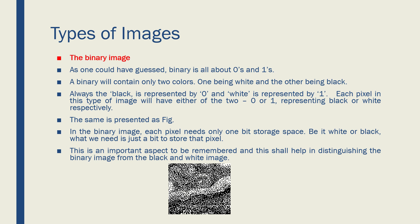The first one is the binary image. What is binary? Binary is all about zeros and ones. A binary image will contain only two colors — one color is black, another color is white. Black is always represented with zero, and white is represented with one. Each pixel of this type of image will be either of the two, which means it can be black or white — zero or one. This is called a binary image. One very important point is that in the binary image, each pixel will need only one bit for storage, which means I can store one pixel in one bit.